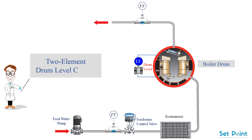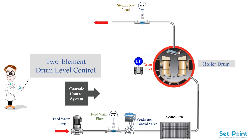Two element drum level control. In this mechanism, one more variable is controlled in the process apart from the level. That variable is the flow rate — the flow rate could be of feed water or the steam, any one of them. They form a cascade control system with the level controller being in the primary loop, and the input from it is used to set the second loop which consists of a flow rate controller. The accuracy is much better and also faster than single element control.